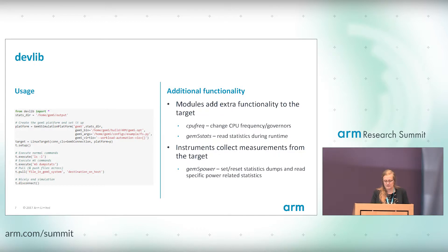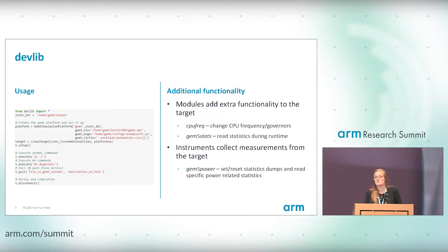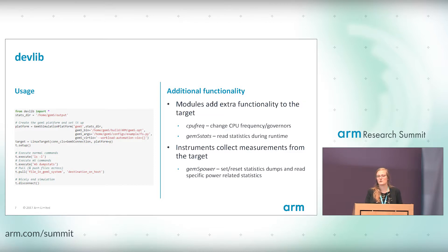There's also added functionality through modules, which extend your target with extra capabilities. For example, the CPU Freak module lets you change CPU frequency and governors at runtime. There is also a GEM5 stats module, which allows you to read statistics at runtime while the simulation is still running. And then you have instruments, which collect measurements from the target at runtime. There's also GEM5 power, which sets and resets statistics and allows you to extract certain power-related statistics.